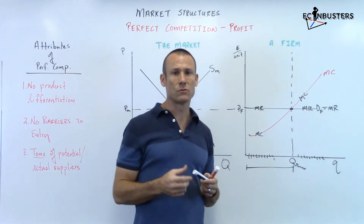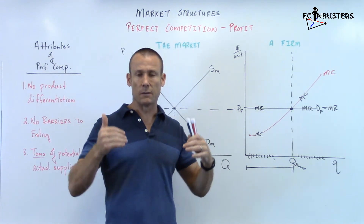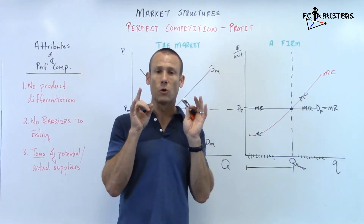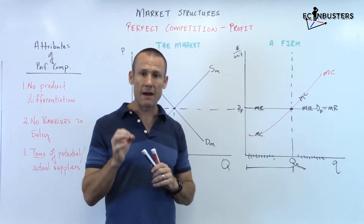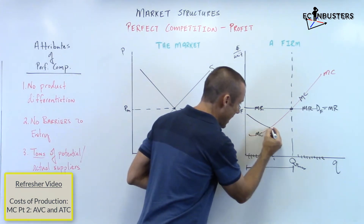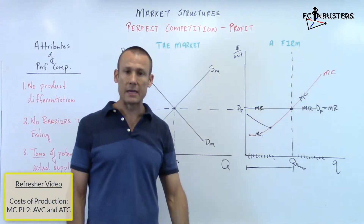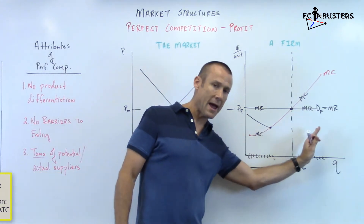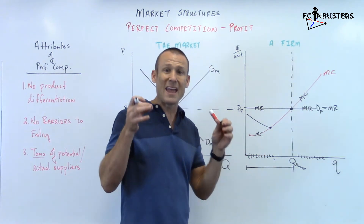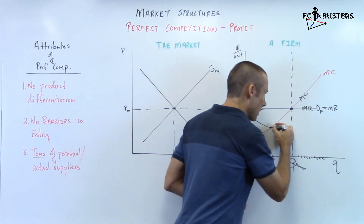To show profit or loss, I need the average total cost curve. To show profit or loss, you must add in the ATC curve. There are a couple of constraints: ATC has to be going down if MC is below it. Once ATC connects to MC, it has to stay below MC and then go up, because MC is now greater than ATC.